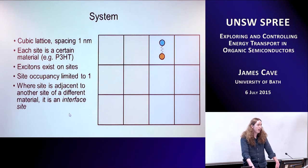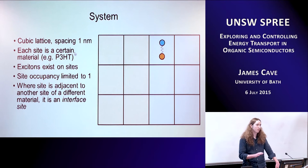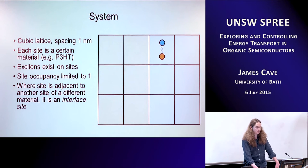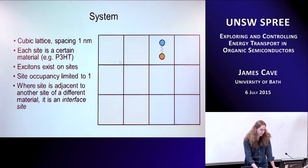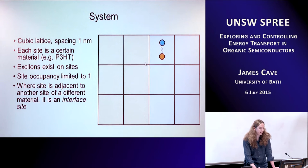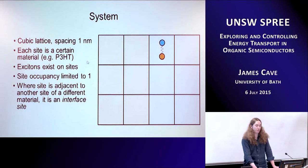The system we're considering consists only of excitons on a cubic lattice with one nanometre spacing — about right for the distance between hopping sites. Each site is a certain material: for example, a beige color for P3HT and another for PCBM. Excitons exist on specific sites and are localized. We limit site occupancy to one. The important sites are interface sites, because that's where we want our excitons to go — to the interface where they can be split into charge carriers and collected.